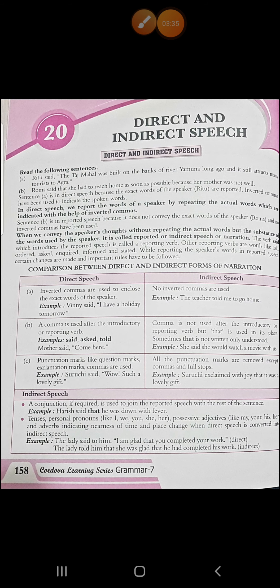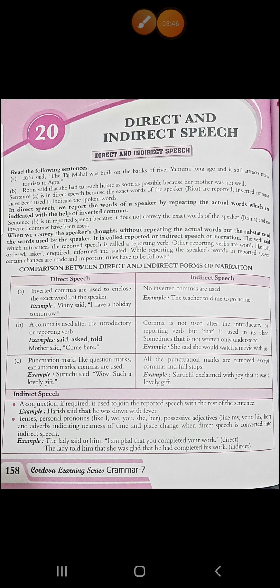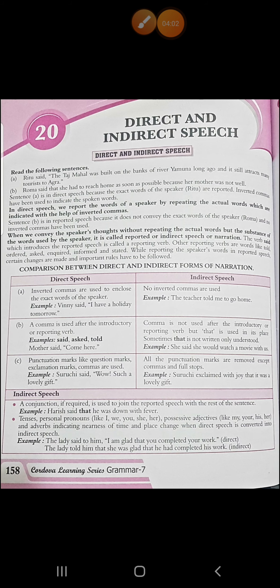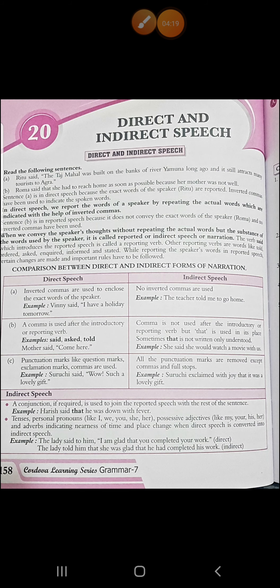In indirect speech, a conjunction, if required, is used to join the reported speech with the rest of the sentence — like, 'Hari said that he was down with fever.' Also, tenses, personal pronouns like I, we, you, she, her, possessive adjectives like my, your, his, her, and adverbs indicating nearness of time and place change when direct speech is converted into indirect speech. For example: 'The lady said to him, I am glad that you completed your work.' In indirect speech: 'The lady told him that she was glad that he had completed his work.' You can see how the personal pronouns are changed.